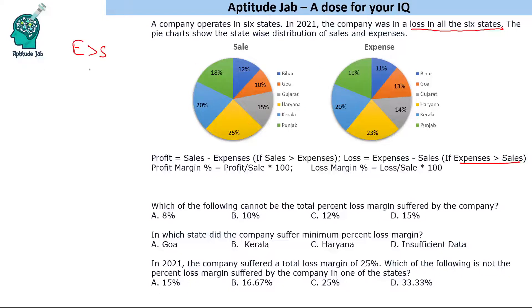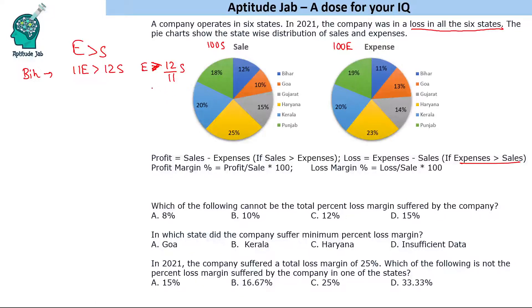Let's say total sales is 100S and total expenses is 100E. For Bihar, expense is 11E and sales is 12S, so E > (12/11)S. That means loss = expense minus sales > (1/11)S, so the loss margin for Bihar is greater than 1/11, which is approximately 9.09 percent.